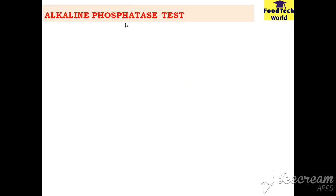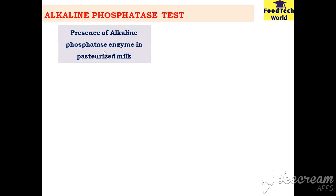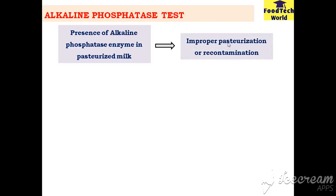The alkaline phosphatase test: alkaline phosphatase is an enzyme naturally present in raw milk. It is denatured by heat treatment like pasteurization, so it is absent in properly pasteurized milk. If it is present in pasteurized milk, it means the milk was not properly pasteurized or has been contaminated with raw milk after pasteurization. Therefore, alkaline phosphatase acts as an indicator of proper milk pasteurization.